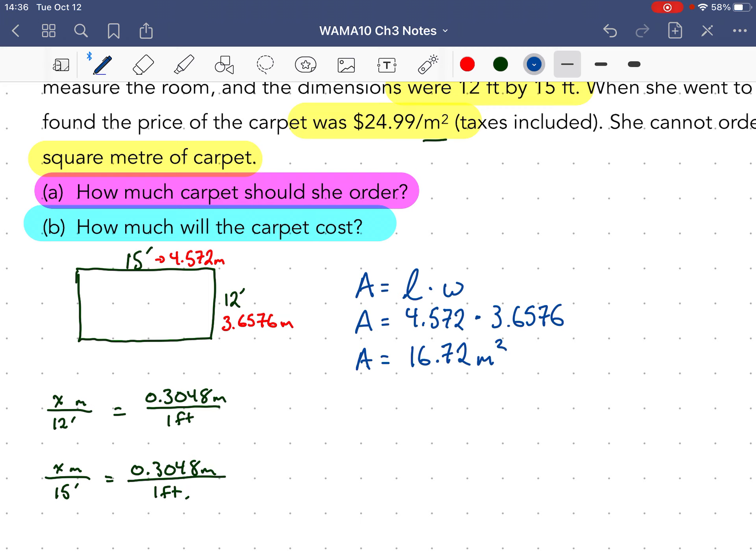Now she can't order a decimal value. So we always want to order a little bit more. So our answer to letter A is: she should order 17 square meters of carpet.